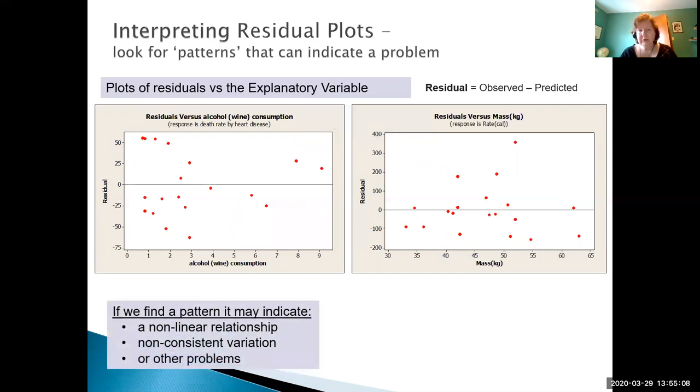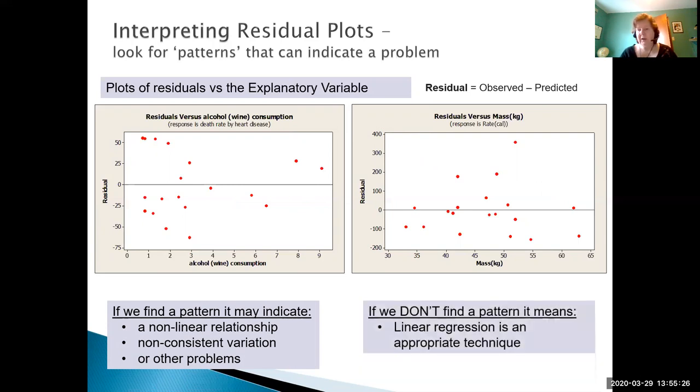Now what we're looking for to interpret these is that we're looking for a pattern. And if there is a pattern what that indicates is that there's maybe a non-linear relationship. Maybe there's not consistent variation or maybe there's some other problem going on that we're not aware of. If we don't find a pattern then that means our linear regression technique is appropriate. Now for both of these examples we don't really see a distinct pattern. There's pretty much variation across this x-axis and there's pretty much variation across this x-axis. We might say that's potentially an outlier and we might look at this one in the wine again maybe saying these are potential outliers for people who drink a lot of liters of wine per day. But for our purposes for the education is that there's no pattern here so linear regression is appropriate in both those cases.